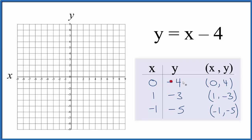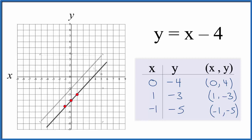We have x is 0 and y is minus 4, so here's x at 0 and we go down on the y-axis to minus 4. Then we have x is 1 and we go down to minus 3. Last one, x is minus 1 and y is minus 5. You can see they all line up in a line. We could have just used two points, but it's nice to use three in case you make a mistake. Let's put a line through this with arrows to show it goes to infinity. This is the graph for y equals x minus 4.